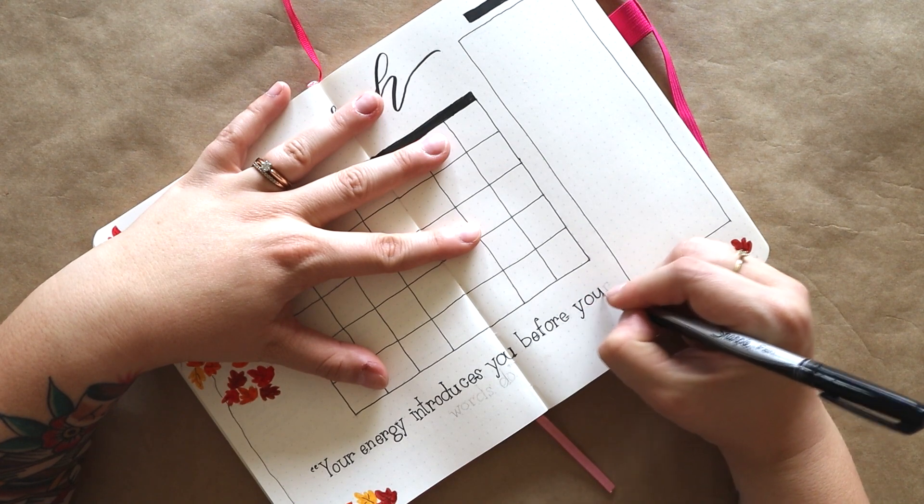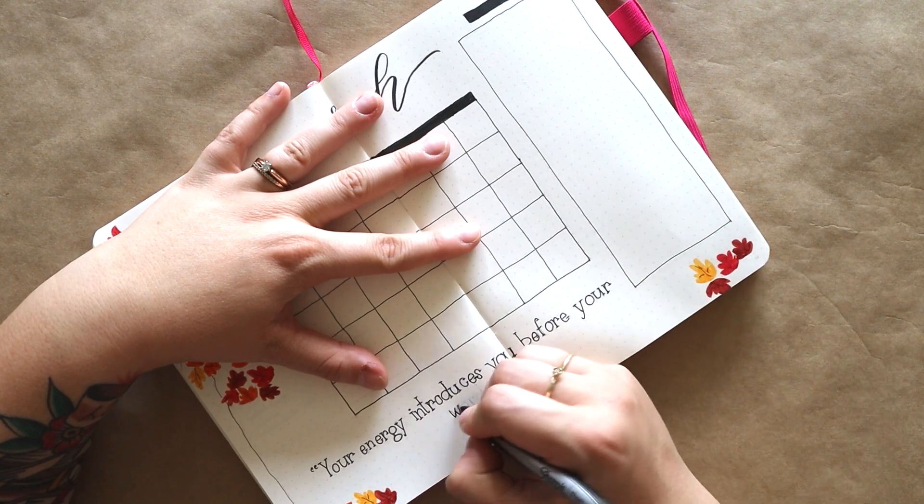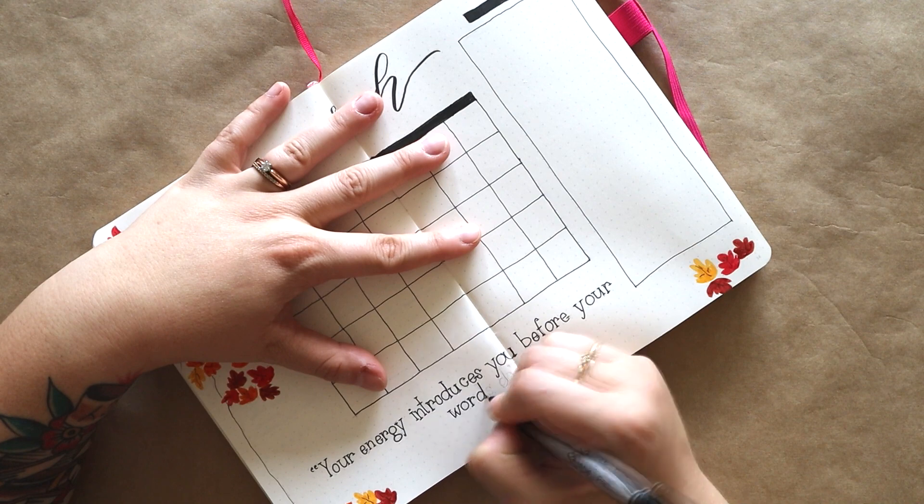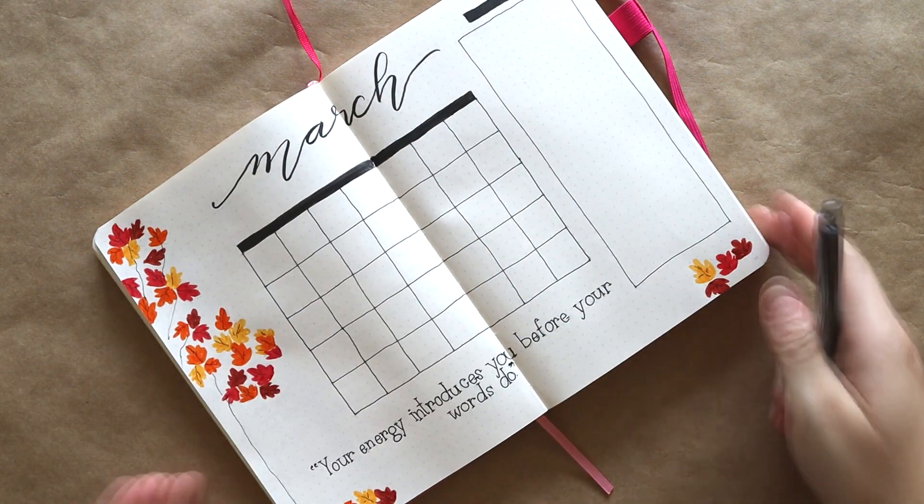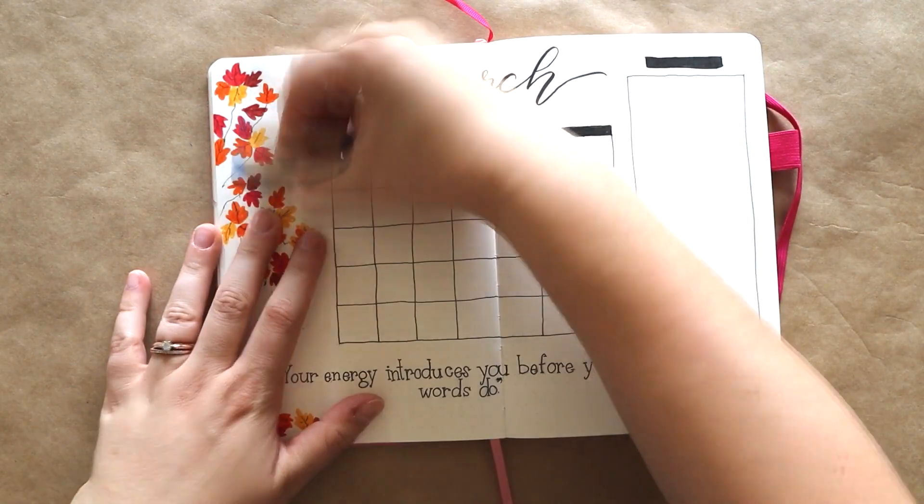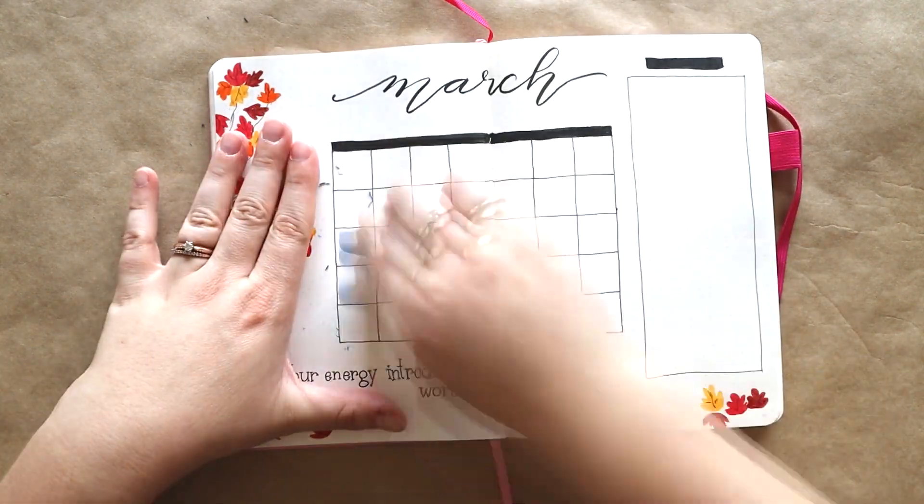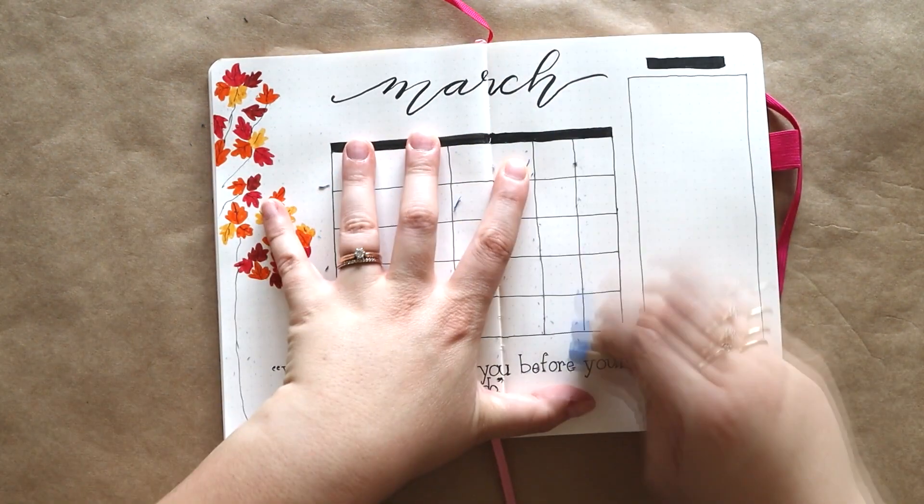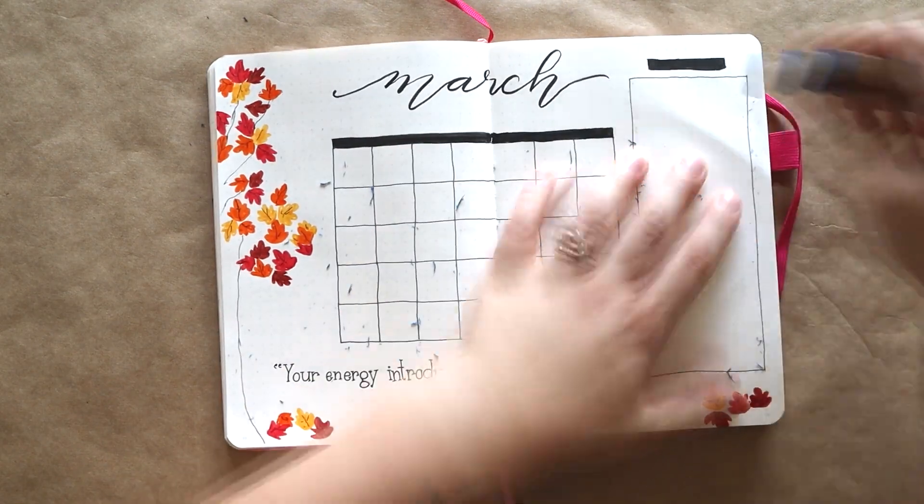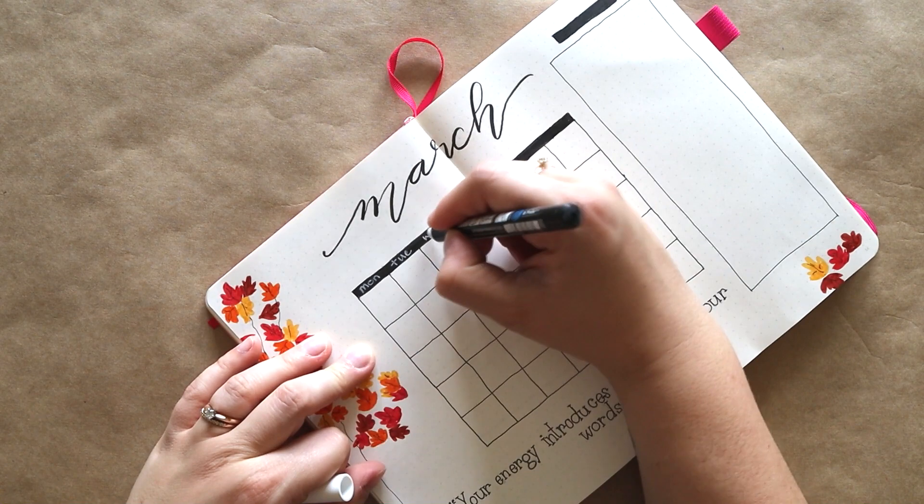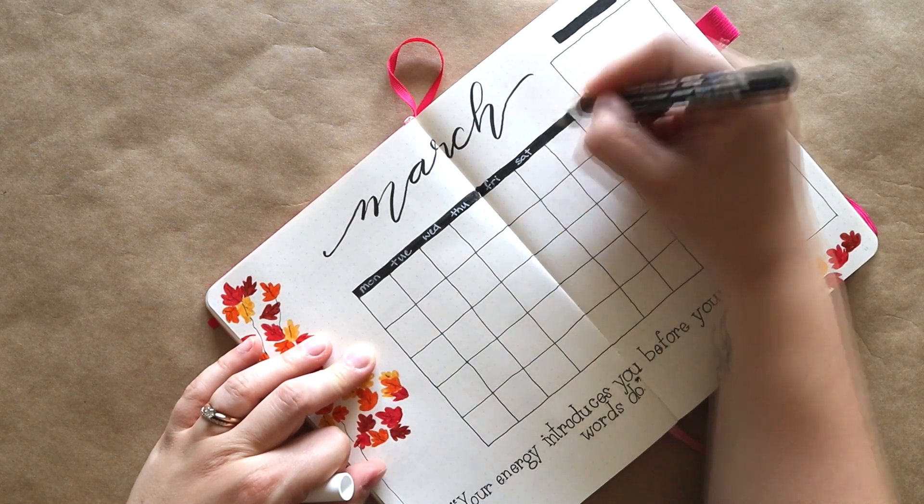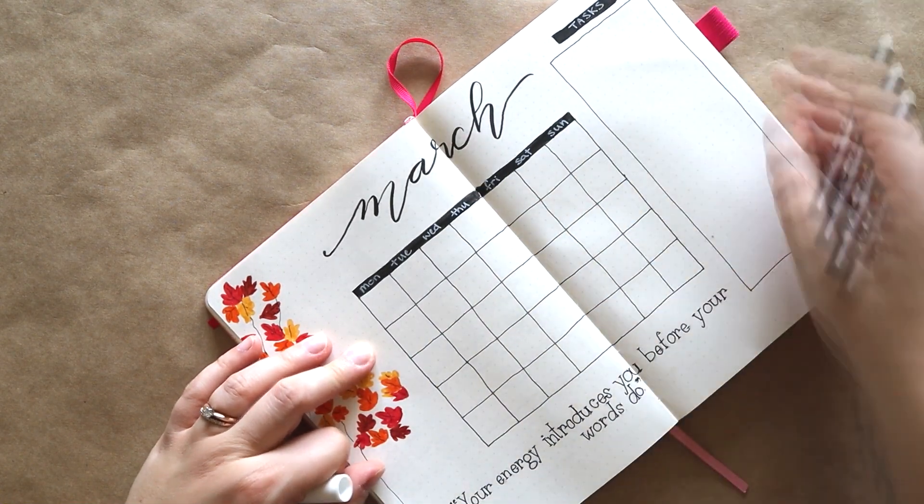Your energy can affect other people. If you come in feeling all depressed and down and stuff all the time, then other people might start to feel that way too. I try to be positive anyway. I'm using my white paint pen to write in the days of the week and the tasks header, and I'm using a gray marker to write in the dates for each day.